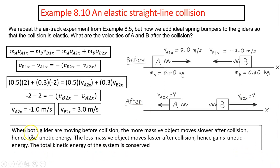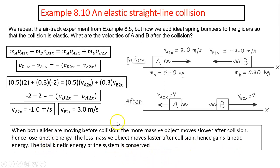During this collision, the more massive object moves slower after collision and loses kinetic energy. The less massive object moves faster after collision and gains kinetic energy. The total kinetic energy of the system is conserved.